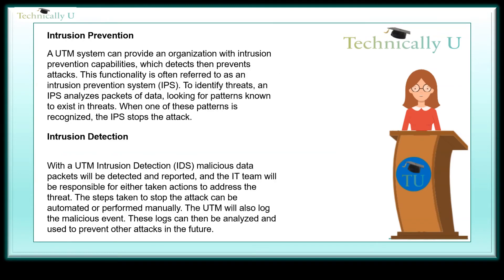Intrusion Prevention. A UTM system can provide an organization with intrusion prevention capabilities which detects then prevents attacks. This functionality is often referred to as an intrusion prevention system, IPS. To identify threats, an IPS analyzes packets of data, looking for patterns known to exist in threats. When one of these patterns is recognized, the IPS stops the attack.